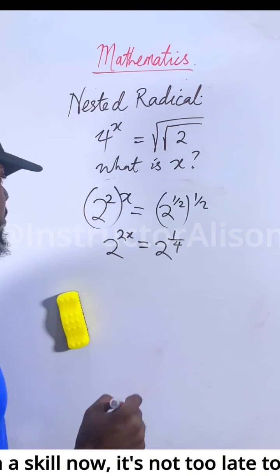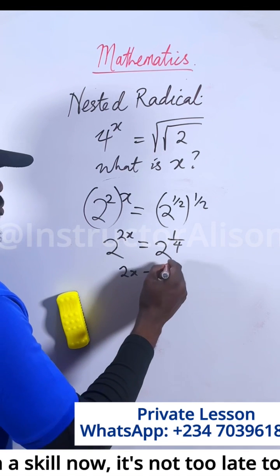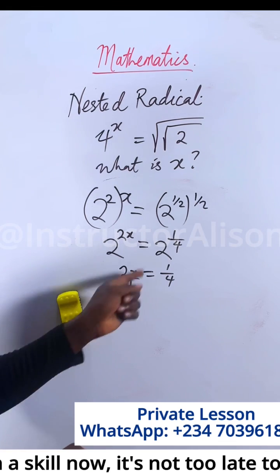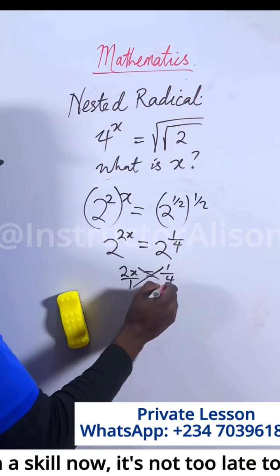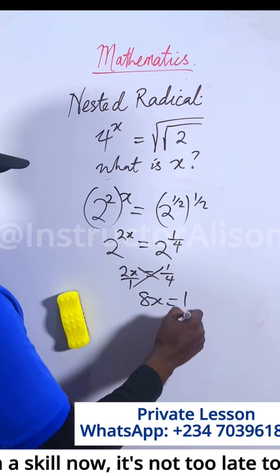This is the same thing as over 1, so that we can cross multiply. If you cross multiply, 4 times 2 gives us 8x equal to 1 times 1. 1 divided by 8, this cancels out.